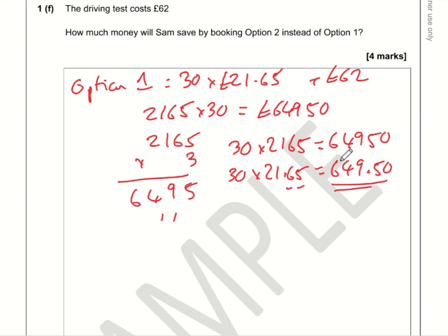And I also need to add on the £62 for the test as well. So 0 plus 0 is 0, 5 plus 2 is 7, 9 plus 6 is 15, carry 1; 4 plus 6 is 10 plus 1 is 11, carry 1; 6 plus 0 is 6 plus 1 is 7. So £711.50. Okay, so Option 1 is £711.50. So let's take a look at Option 2.